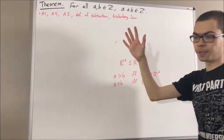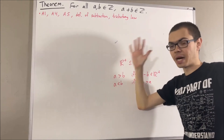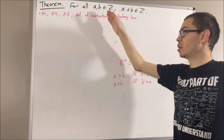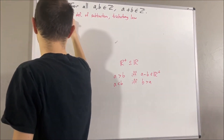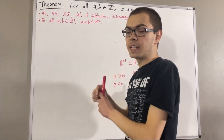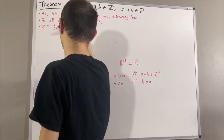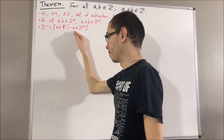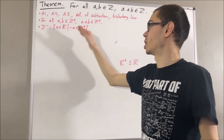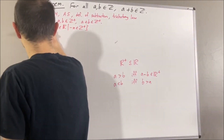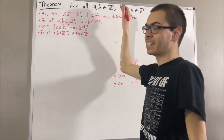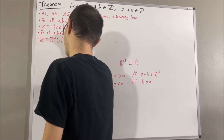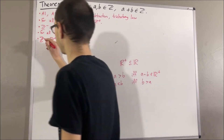So where do the integers come into play? In our real number system, we have defined the positive integers as a subset of the real numbers, and we have proven that for all positive integers a and b, a plus b is a positive integer. Using the set of positive integers, we defined the set of negative integers as the set of all real numbers n such that the negative of n is a positive integer. From here, we proved that for all negative integers a and b, a plus b is a negative integer. And we define the set of integers as the union of the set of positive integers, zero, and the negative integers.